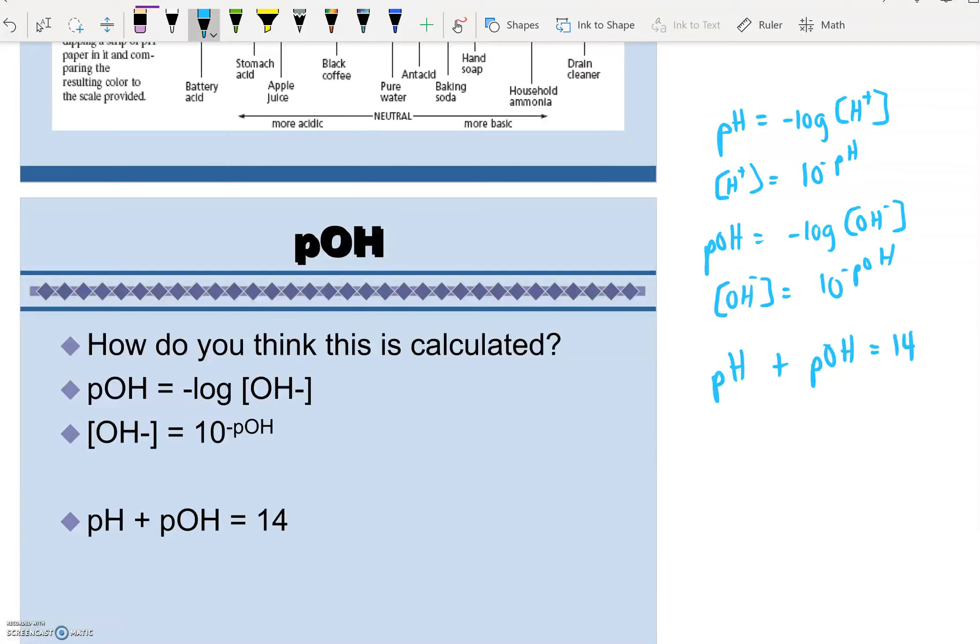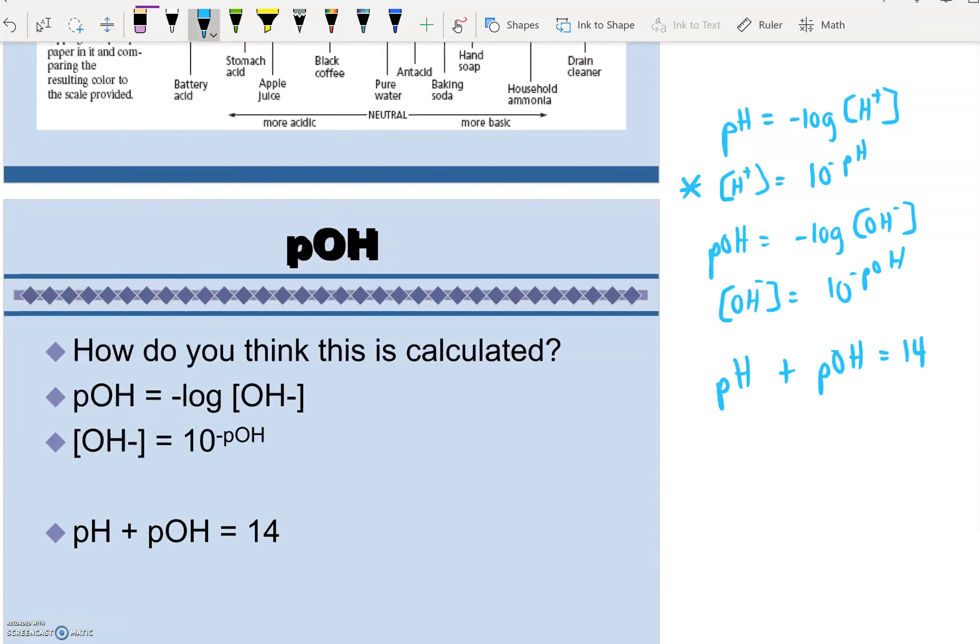Number 1 says, if the pH of a solution is 10.3, what is the H plus concentration? So that clearly helps me to see that this is the equation we're going to use for number 1 on page 13. So H plus concentration is equal to 10 to the negative, our pH this time is 10.3. So 10 raised to the negative 10.3 gives us 5.01 times 10 to the negative 11 molar. So that would be our answer.